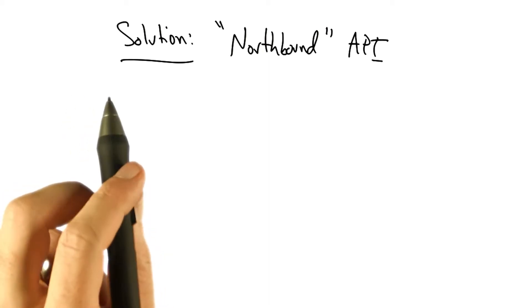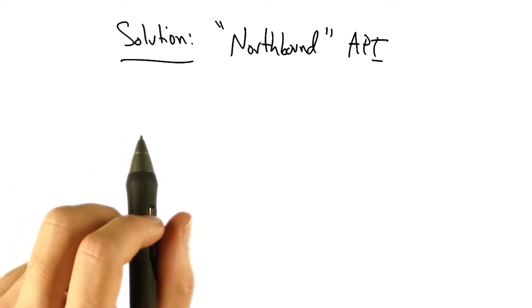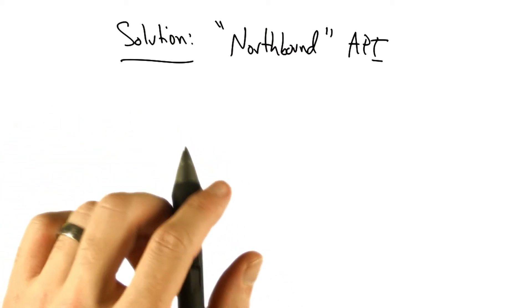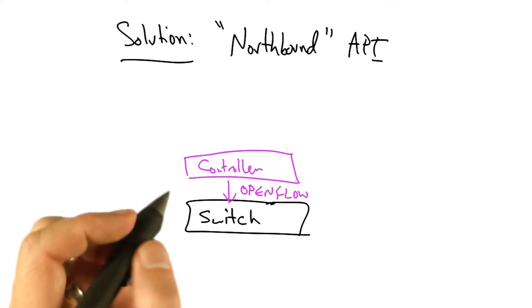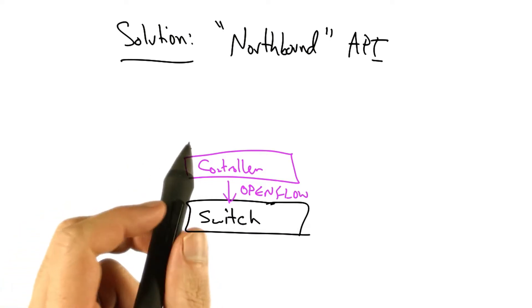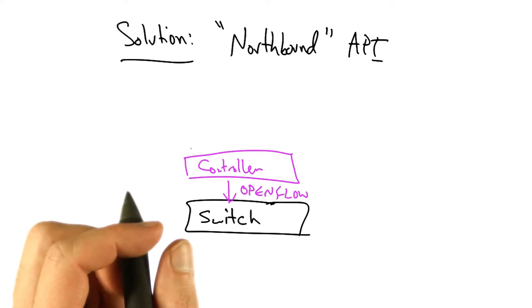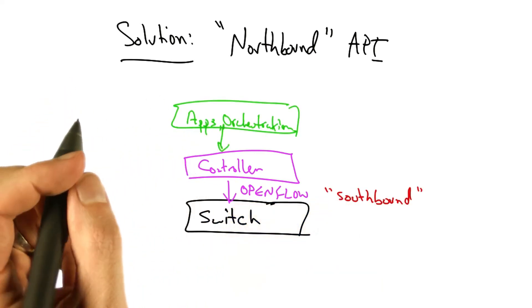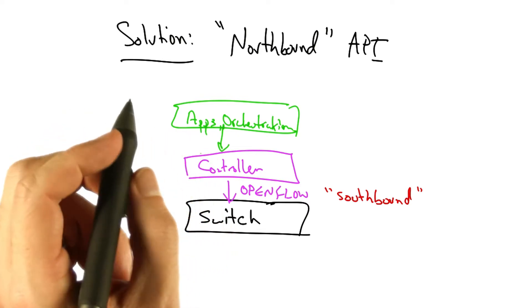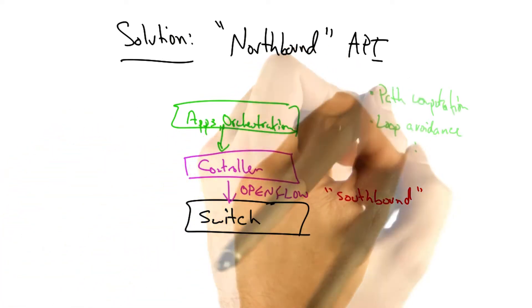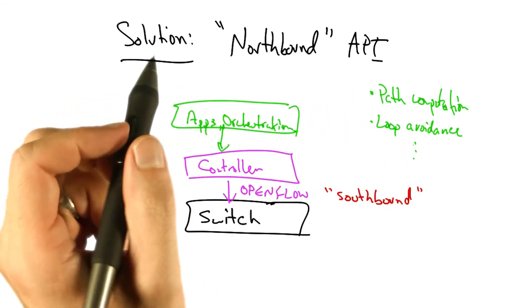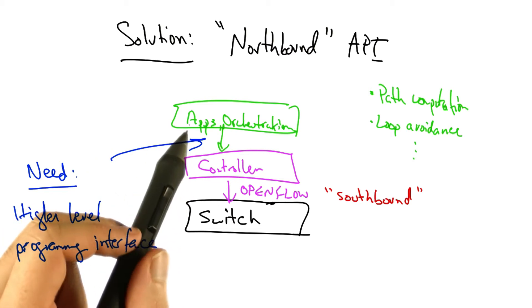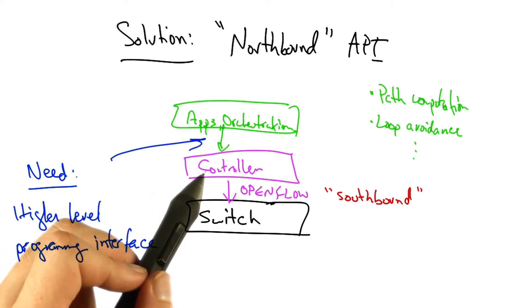The solution is to provide a northbound API, which is a programming interface that allows applications and other orchestration systems to program the network. At the low level, the controller updates state in switches using OpenFlow flow modification rules. However, applications or orchestration systems may need to perform more sophisticated tasks, such as path computation and loop avoidance, requiring a higher-level programming interface that allows these applications to talk to the controller.